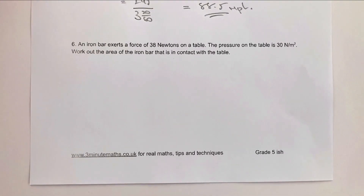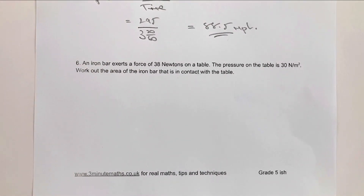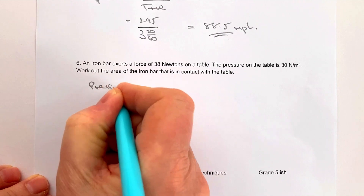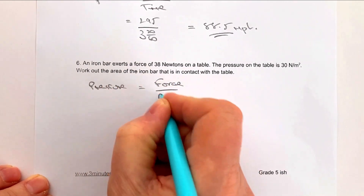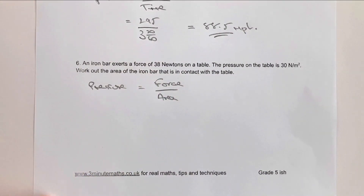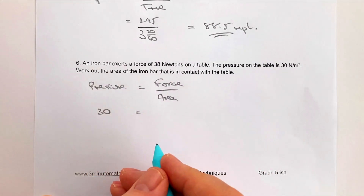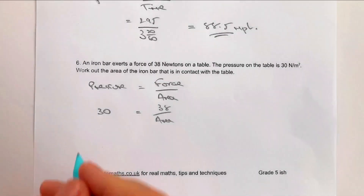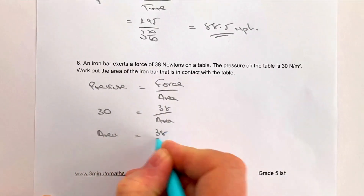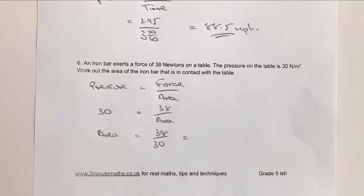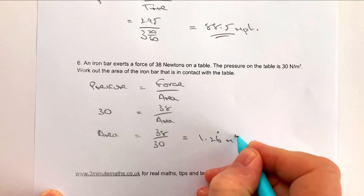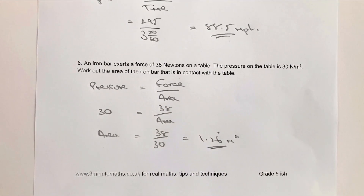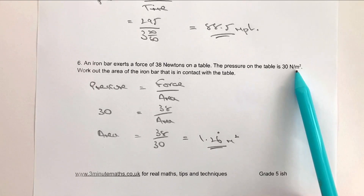Question six: an iron bar exerts a force on the table. We use pressure equals force over area, and we need to find the area in contact with the table. The pressure is 30 and the force is 38, so with a little algebra: area equals 38 over 30. Put that into a calculator and you get 1.26 recurring meters squared.